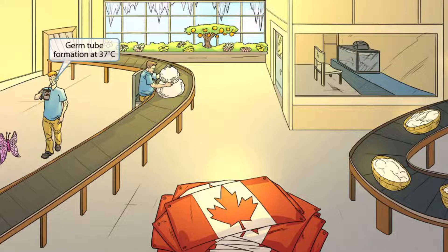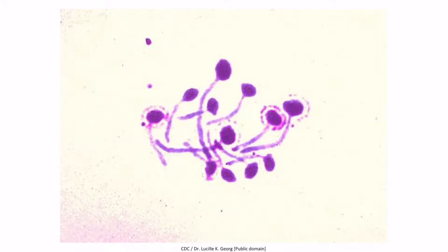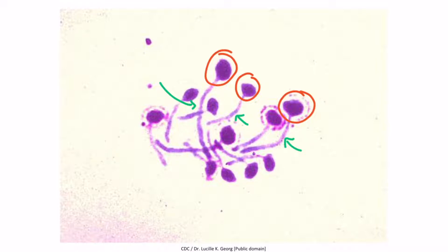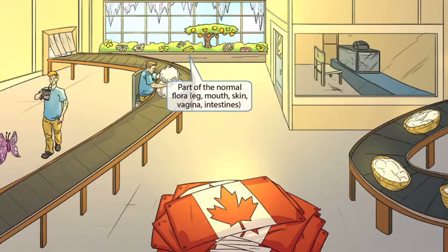We talked about the morphology of Candida at cold temperatures. Now let's talk about the morphology at warm temperatures. Notice that this guy is drinking out of a straw, which resembles the morphology of a germ tube. Also, he's drinking some hot coffee, and the reference to coffee being hot should help you remember that germ tube formation occurs at 37 degrees Celsius, or warm temperatures. This is an image of germ tube formation — taken by warming a sample to 37 degrees Celsius for 3 hours. The circular structures are yeast cells, and the elongated structures coming off of them are true hyphae. It's high yield to understand this test and recognize this morphology.